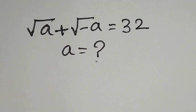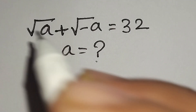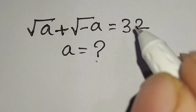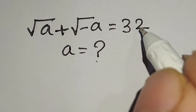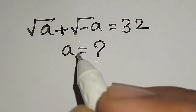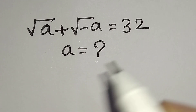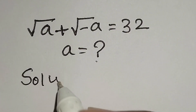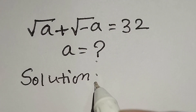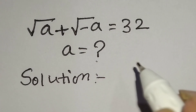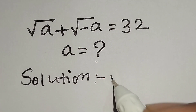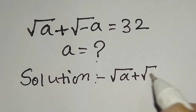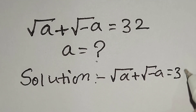Hello, this is a nice math problem. The square root of a plus the square root of negative a is equal to 32, and we have to find the value of a. So let's start the solution. The given equation is square root of a plus square root of negative a is equal to 32.